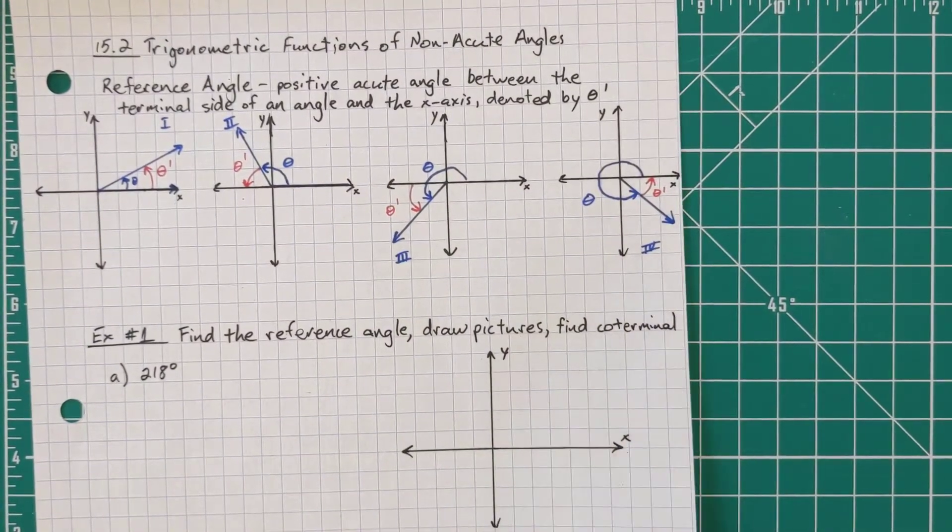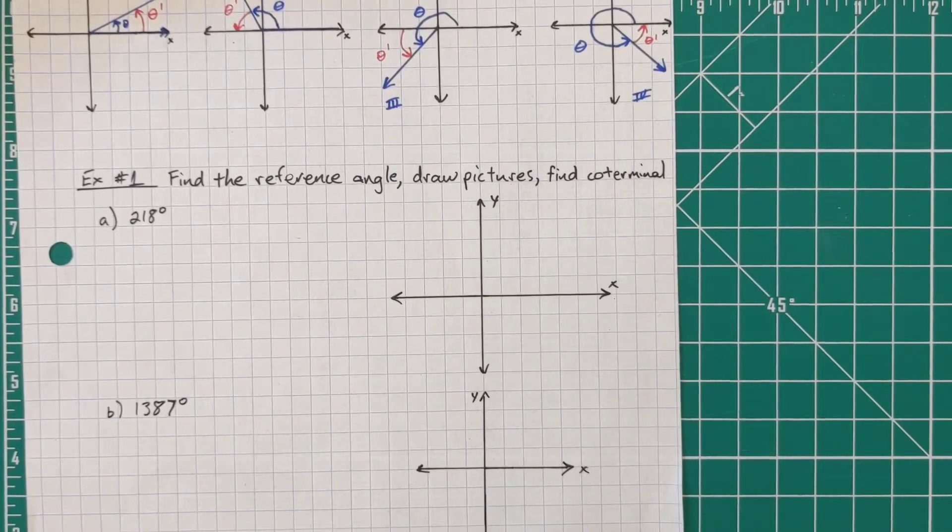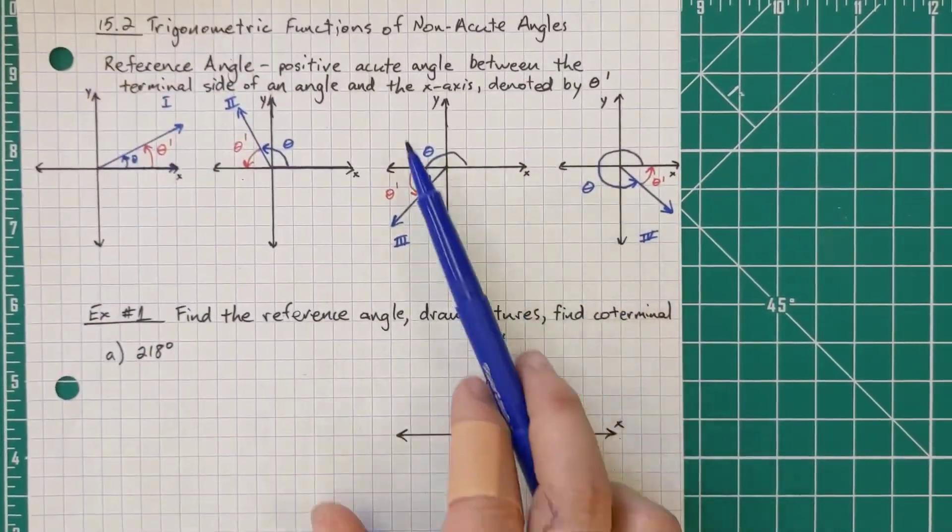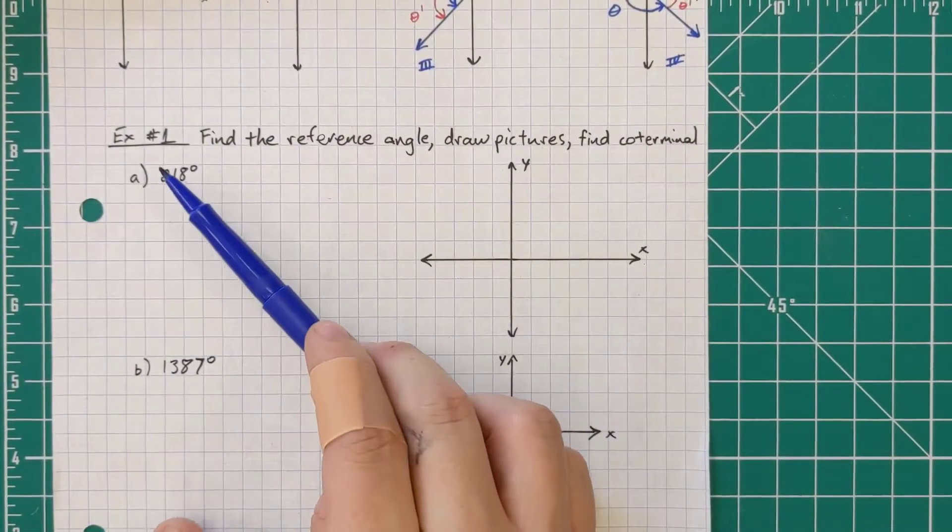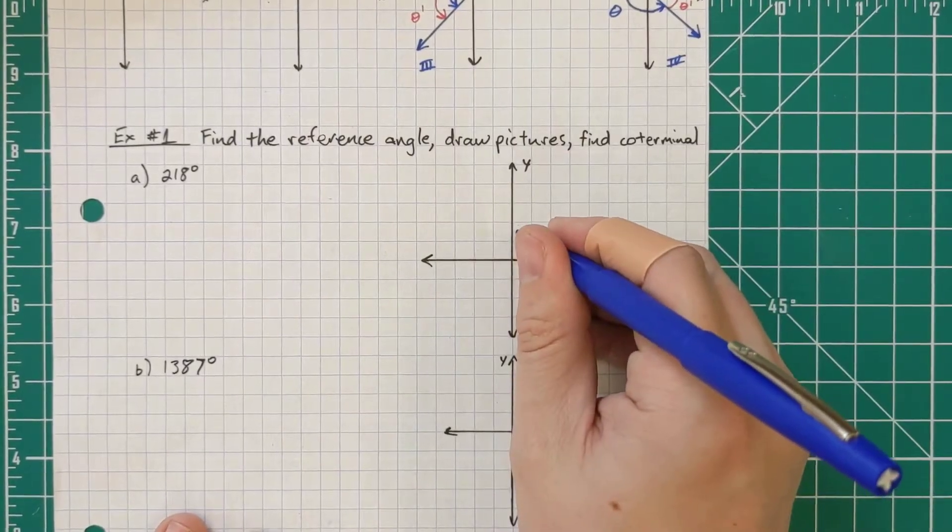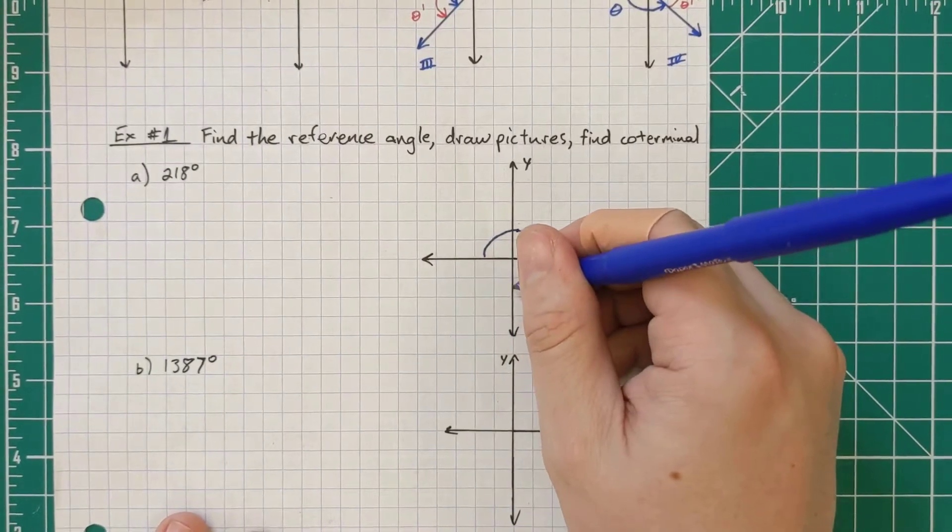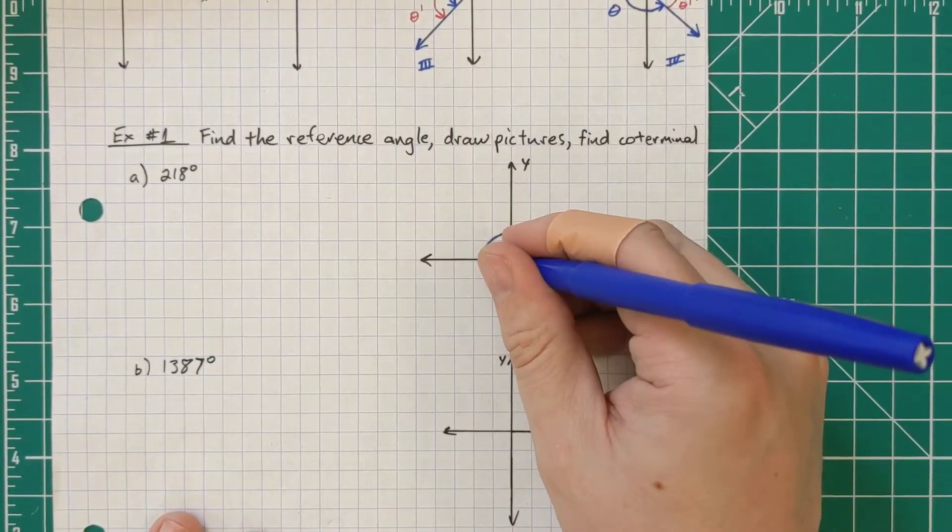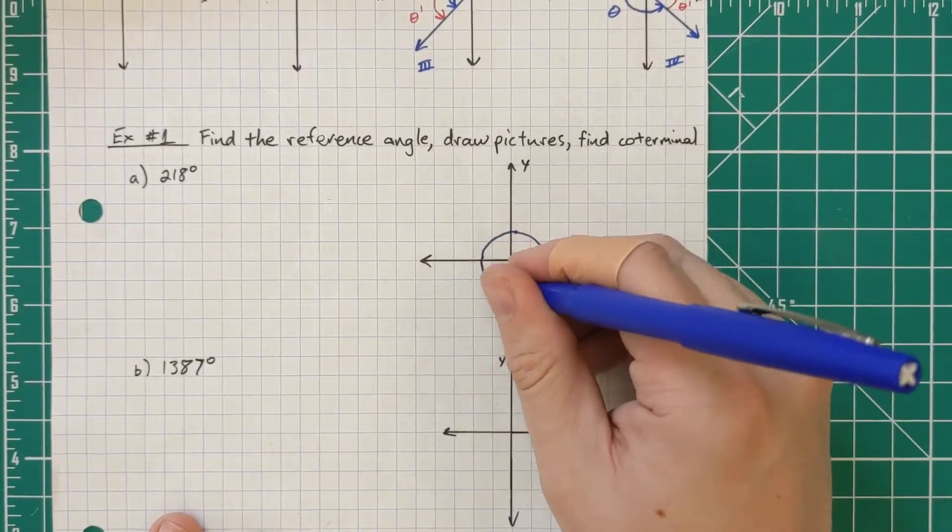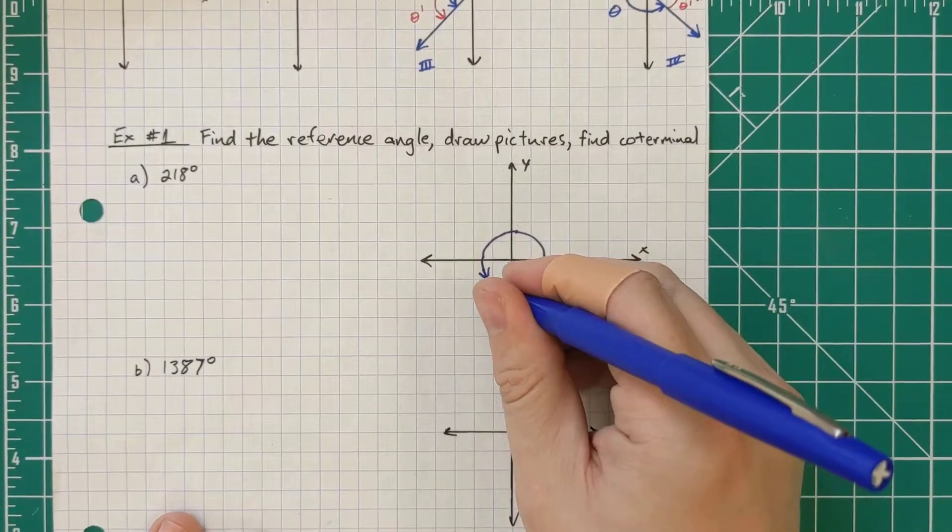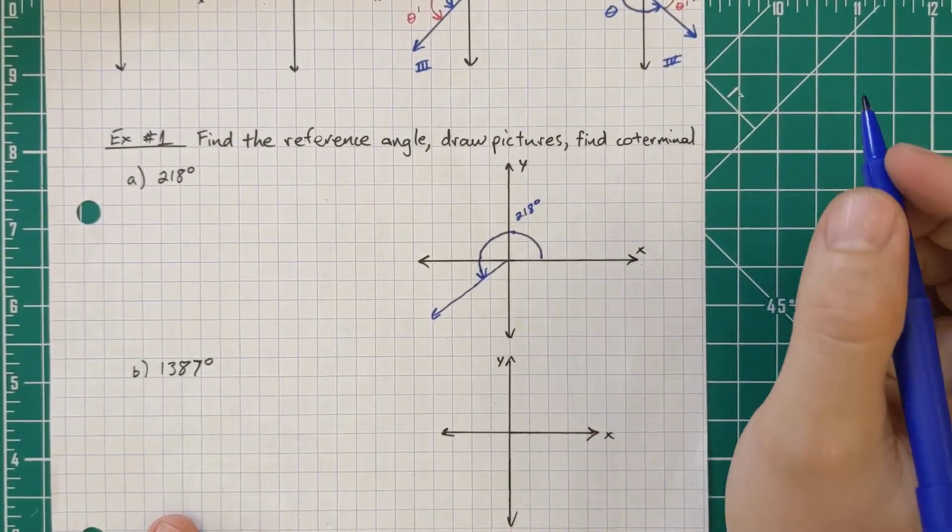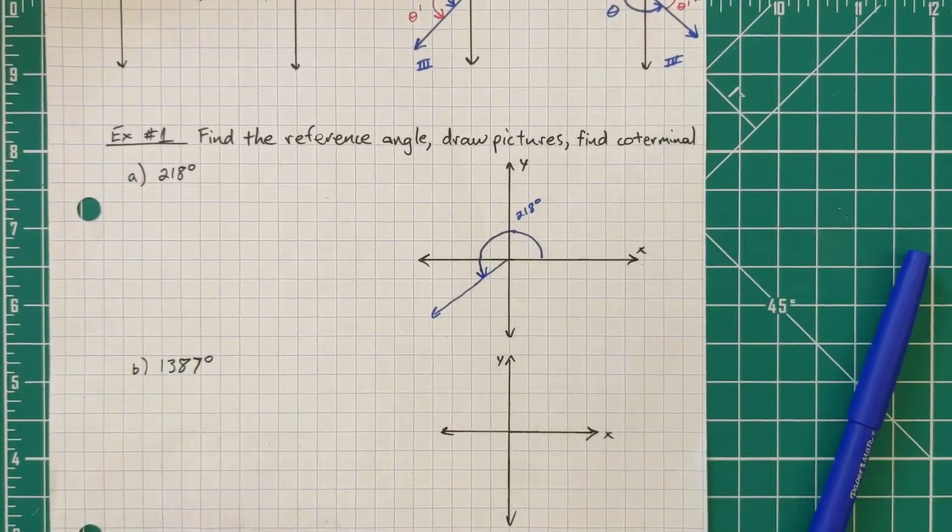All right, so some examples. I want to find the reference angle, draw a picture, and then find the coterminal angle if we need that. So 218 degrees. That's going to start here. If I go to the y-axis, that's 90 degrees. Keep going. That's 180 degrees. If I get all the way to here, that's 270. That's not quite how far I want to go, but if I'm at 180, I still have another 38 degrees. So 45 degrees would be halfway, but this is not going to be quite halfway. So I'm going to say that is approximately 218 degrees. There's my original angle.